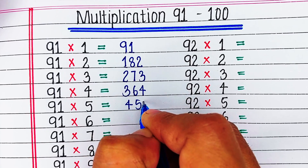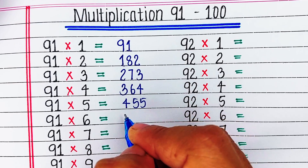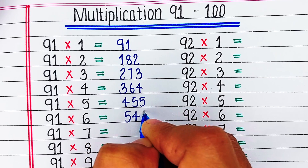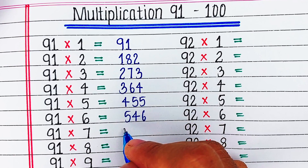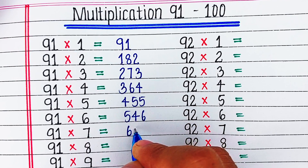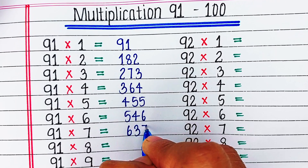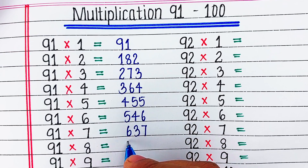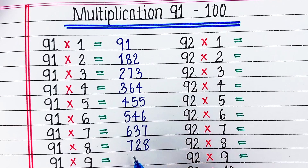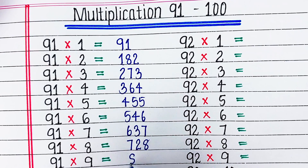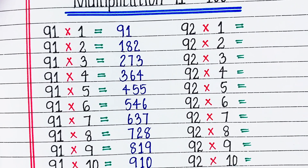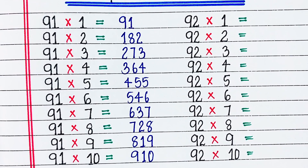91 ones are 91. 91 twos are 182. 91 threes are 273. 91 fours are 364. 91 fives are 455. 91 sixes are 546. 91 sevens are 637. 91 eights are 728. 91 nines are 819. 91 tens are 910.